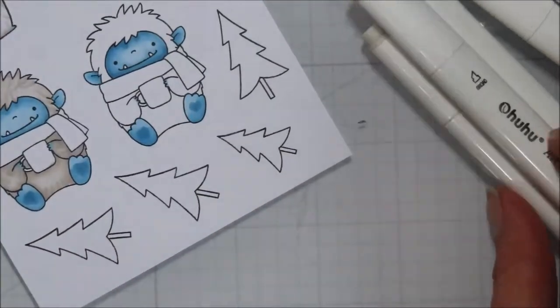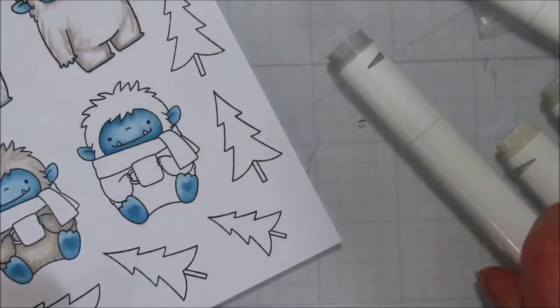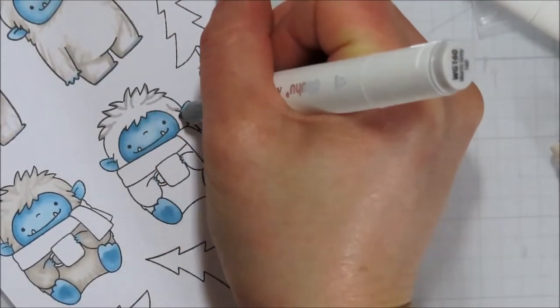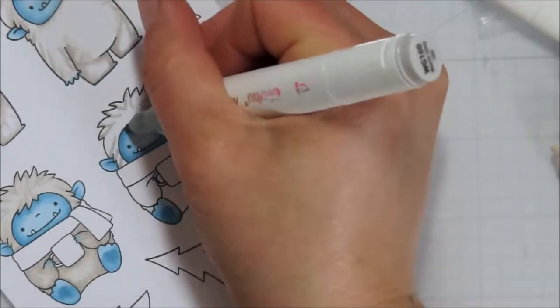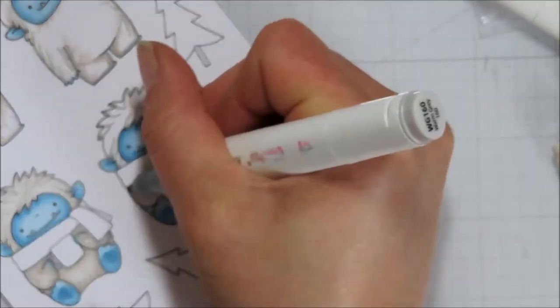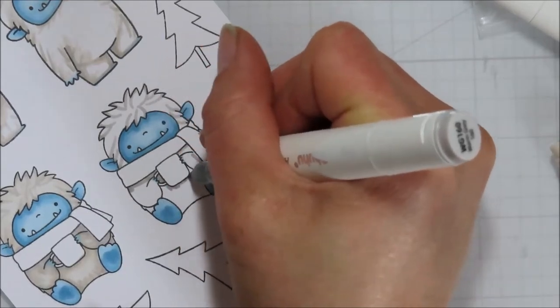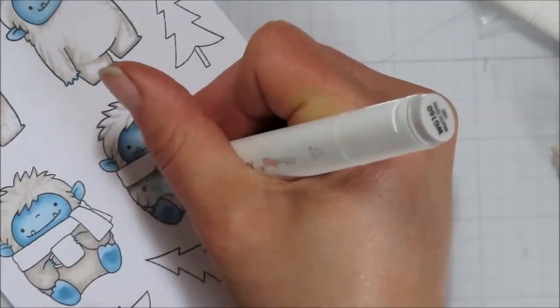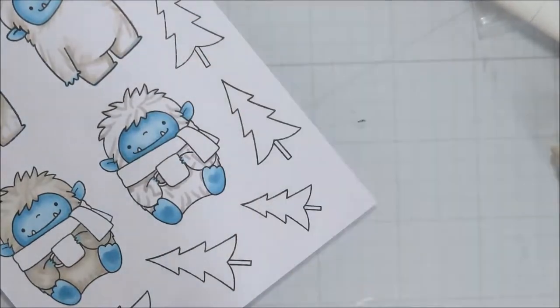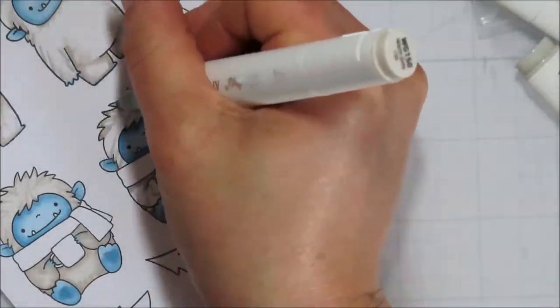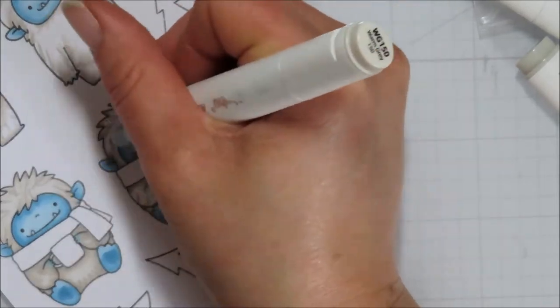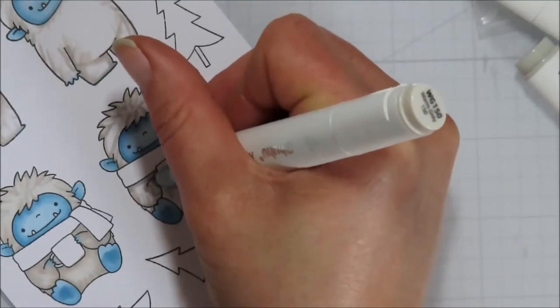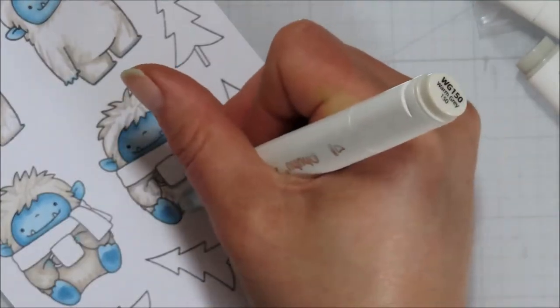I went with some super light warm grays for my Yeti's fur because I want his fur to be white, but I also want that depth and dimension. So by adding a really light warm gray in there, I feel I get that kind of polar bear fur look to my Yeti. And I'm just using a flicking motion to kind of add some chunks of hair in there. And then I'll blend it out with the next one down for my marker blend.